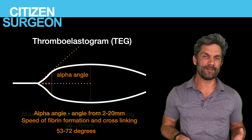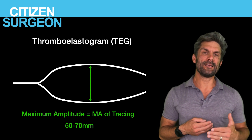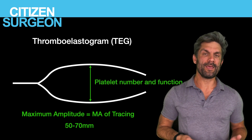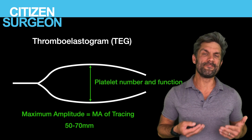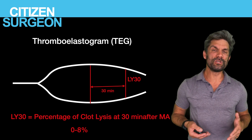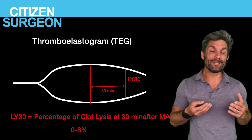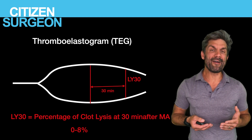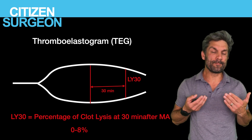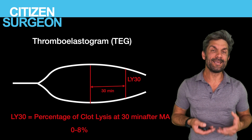The maximum amplitude, shown in green, is the widest distance between the two lines in the waveform, indicative of both platelet number and platelet function. The normal maximum amplitude is between 50 and 70 millimeters. For the last parameter, looking at the second half of the waveform, we get into clot dissolution or fibrinolysis — the LY30, or lysis at 30 minutes. Normally you'll have between zero and eight percent of the clot lysed; LY30 is that percentage at 30 minutes, and LY60 would be the percentage lysed at 60 minutes.